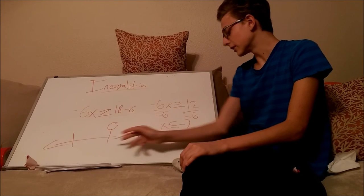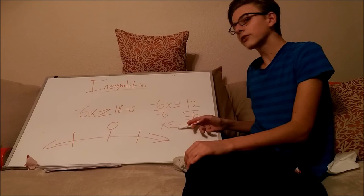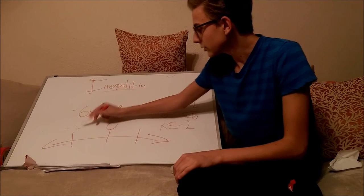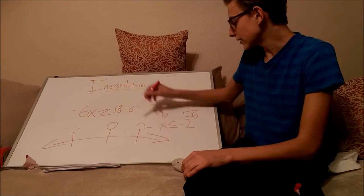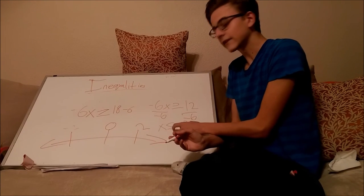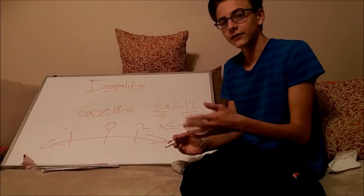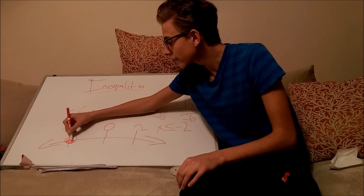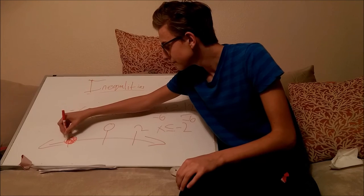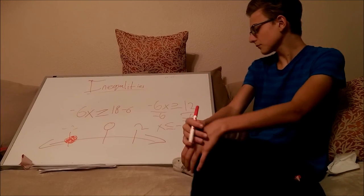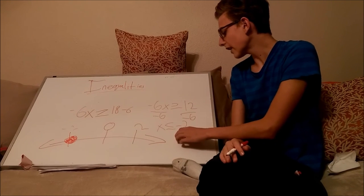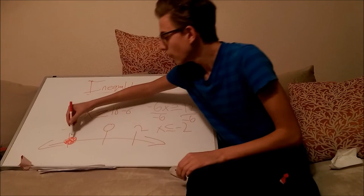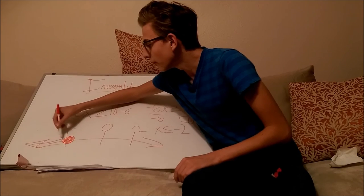Now here's how we put this on a number line. Because x is less than or equal to negative 2, we write negative 2 on the number line and 2 on the other side. Because it has the line under it — making it less than or equal to — we have to fully color in the circle. And because x is less than or equal to negative 2, we bring the arrow back that way.